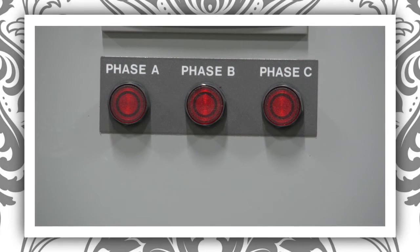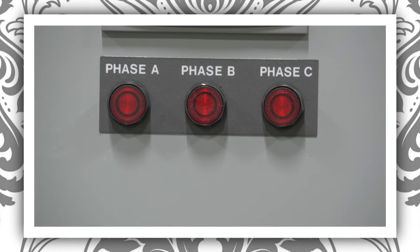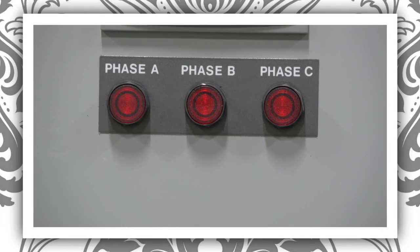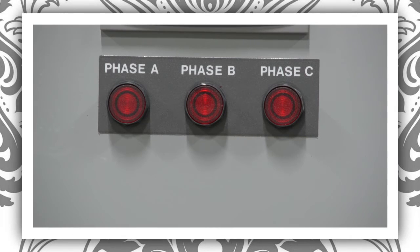So using high-resistance grounding, you can use the current device and measure the current throughout conduits throughout the system and try to figure out where exactly the ground fault is.